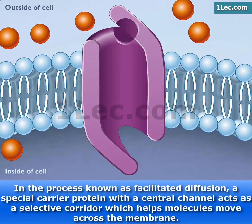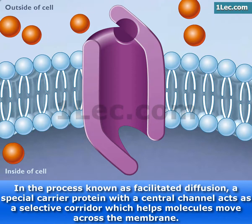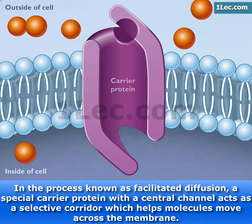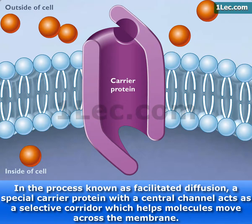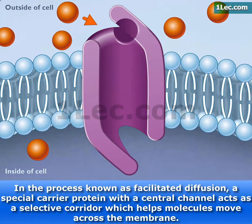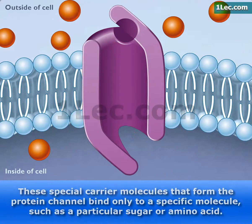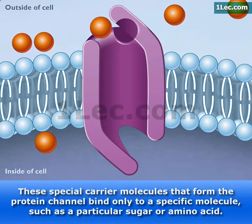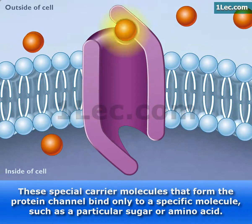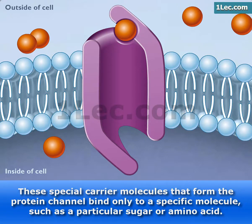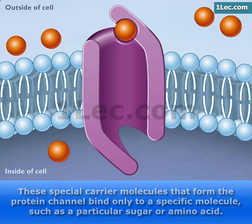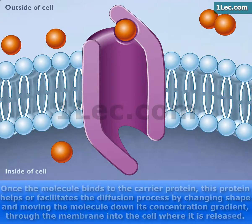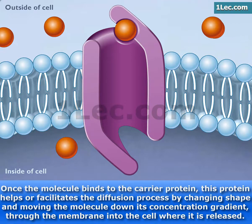In the process known as facilitated diffusion, a special carrier protein with a central channel acts as a selective corridor which helps molecules move across the membrane. These special carrier molecules that form the protein channel bind only to a specific molecule, such as a particular sugar or amino acid. Once the molecule binds to the carrier protein,